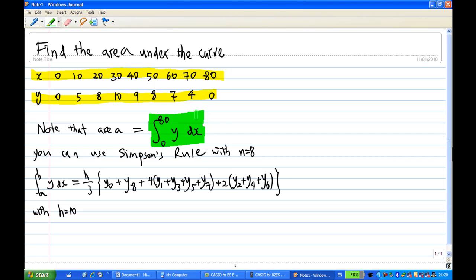Because we can label the points, the first point is called Y0, second point is called Y1, third point is called Y2, fourth point is called Y3, fifth point is called Y4, sixth point is called Y5, seventh point is called Y6, eighth point is called Y7, and the last point is Y8.